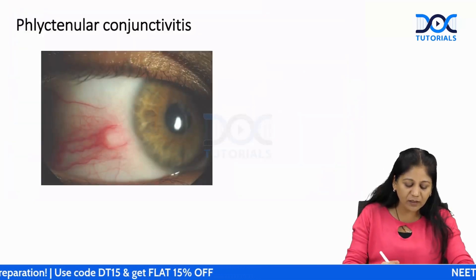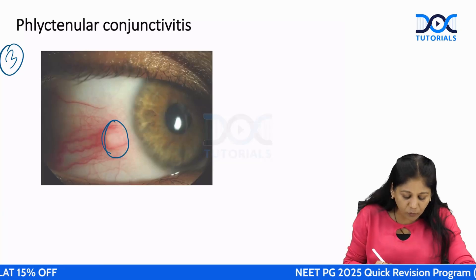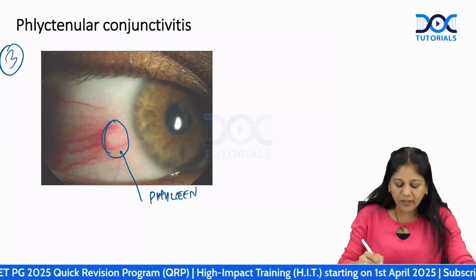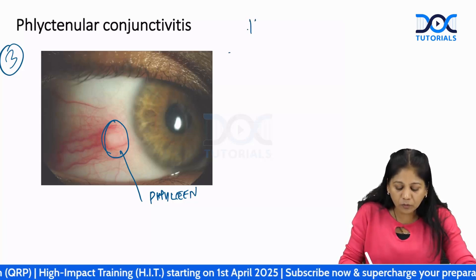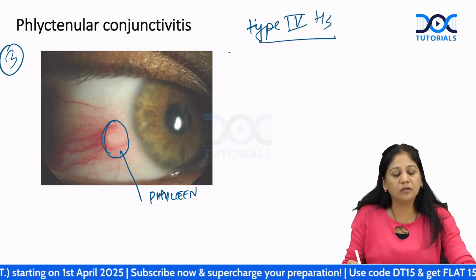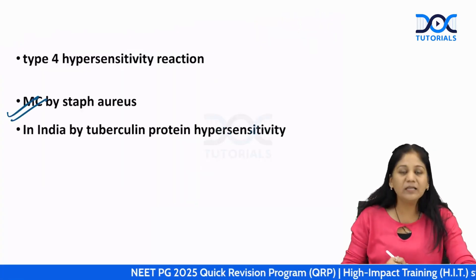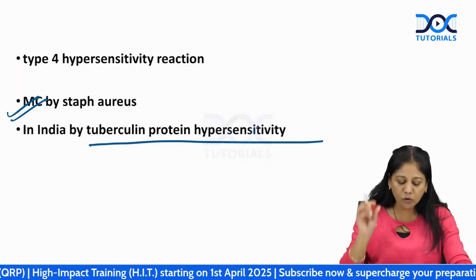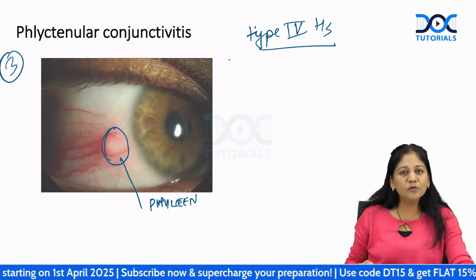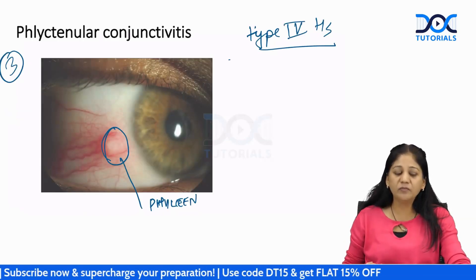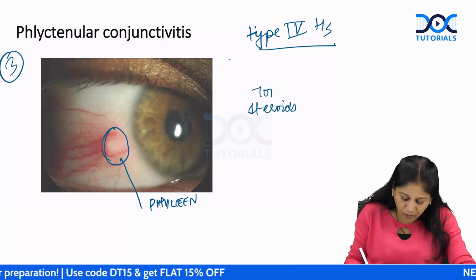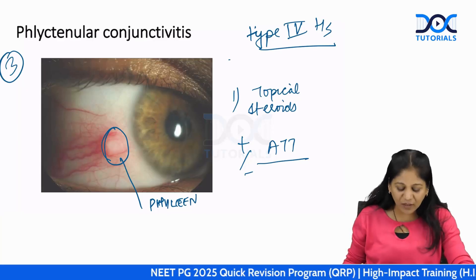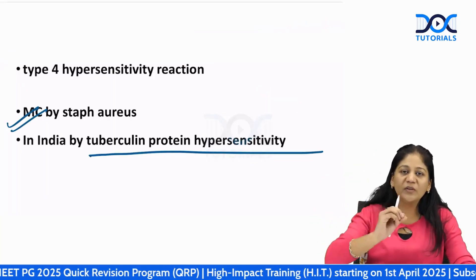Phlyctenular conjunctivitis features a nodule (phlycten) near the limbus due to a type 4 hypersensitivity reaction. It occurs mainly due to hypersensitivity to Staphylococcus aureus proteins or, in our region, to tuberculin protein. Treatment: a short course of topical steroids for 5–10 days. If the patient has tuberculosis, start ATT as well.